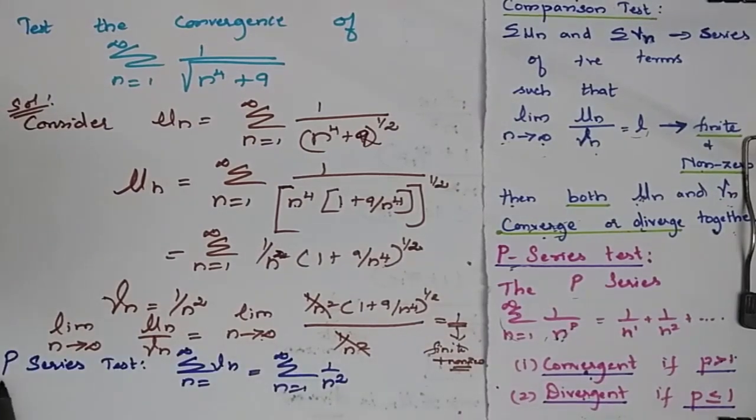So now when I go for my p-series test, I am changing to 1 to infinity of vn. So my vn is 1 by n squared. So when I substitute here I will get 1 by n squared.